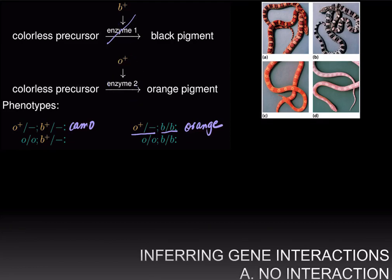If you are homozygous for the mutant allele of the O gene, you will not have enzyme 2 and therefore won't have orange pigment. But if you have at least one copy of the B+ allele, you will have enzyme 1 and will make black pigment. Your phenotype is going to be black.